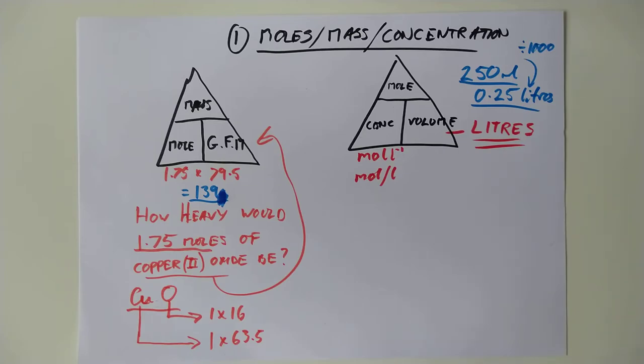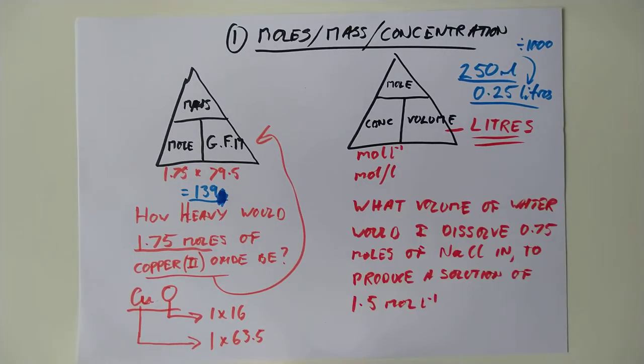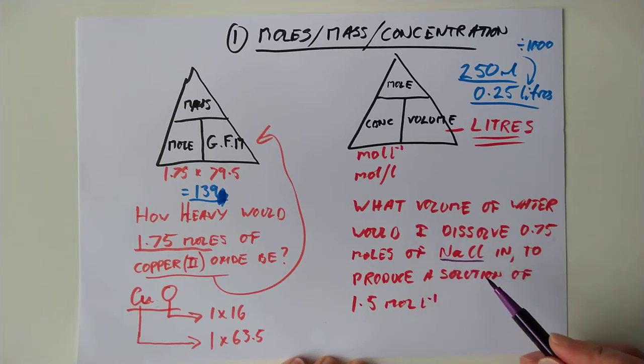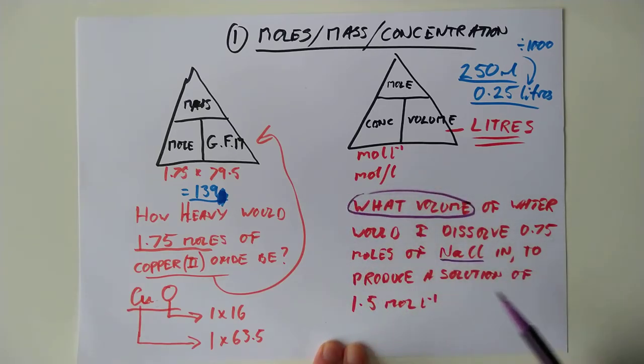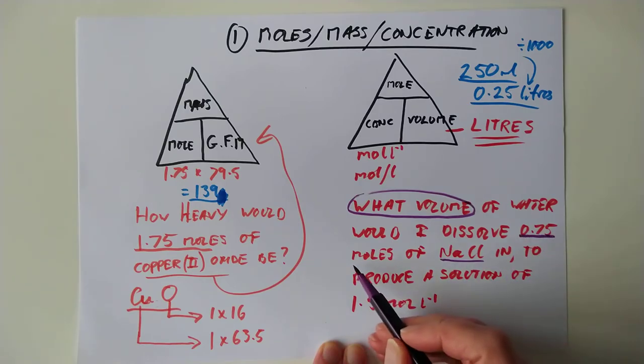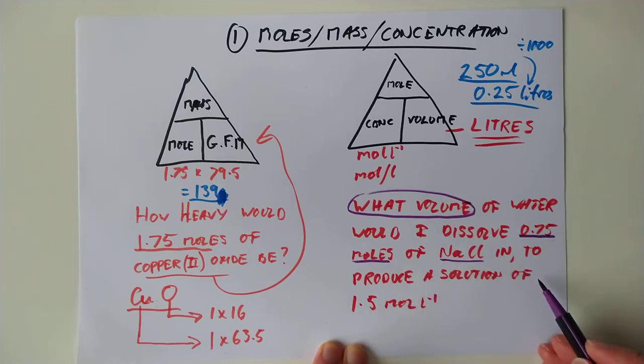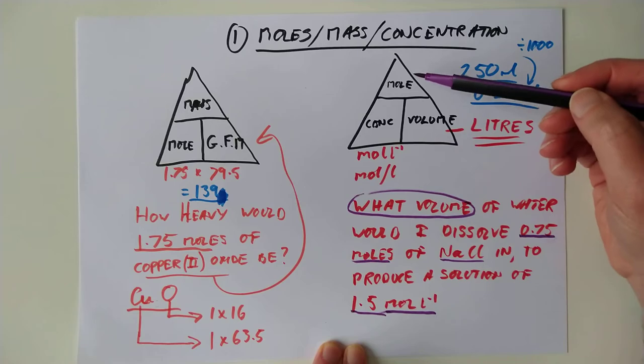Let's have a look at an example of a calculation dealing with solutions. What volume of water would I dissolve 0.75 moles of sodium chloride in to produce a solution of 1.5 moles per litre? This one's just a little bit sneakier, because I have quoted sodium chloride here with the hope that you start to calculate a GFM. But there is no need to calculate a GFM. They've given you a moles and a concentration, and they're asking for a volume. So it is entirely just this triangle here.